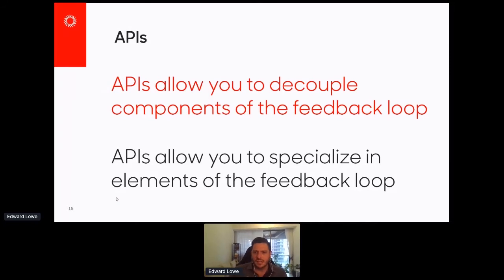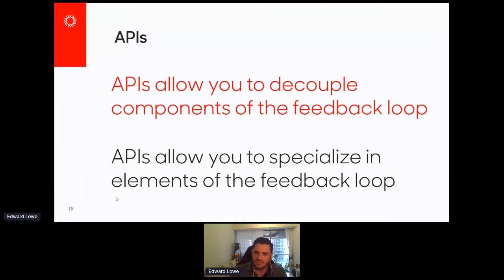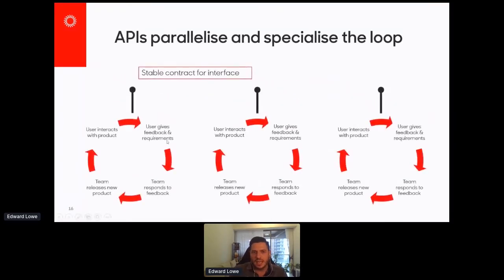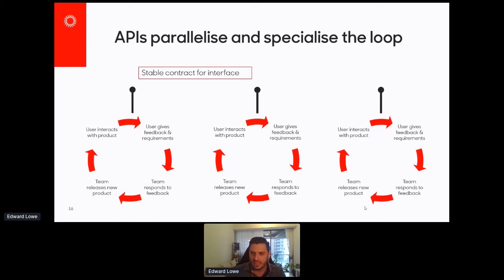Moving on to APIs — I had to include this, it's API Days after all. Why are APIs good? They allow you to decouple components of the feedback loop and to specialize or outsource that specialization. As long as you have a stable contract for the interface between your components, you can have really tight feedback loops on each component and then integrate via API. With a monolithic application with tightly coupled components, you can only have the feedback loop at the whole monolithic level — and that's what slows everything down. By breaking things into components and integrating via API, we can parallelize the user feedback loop.